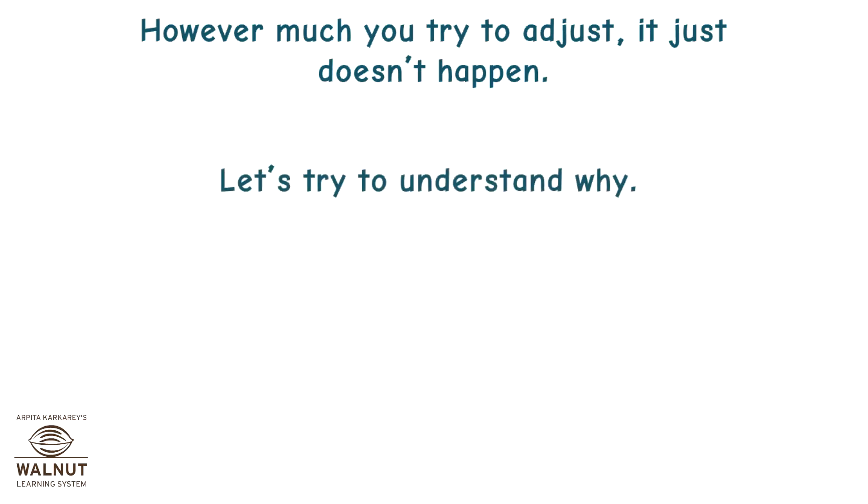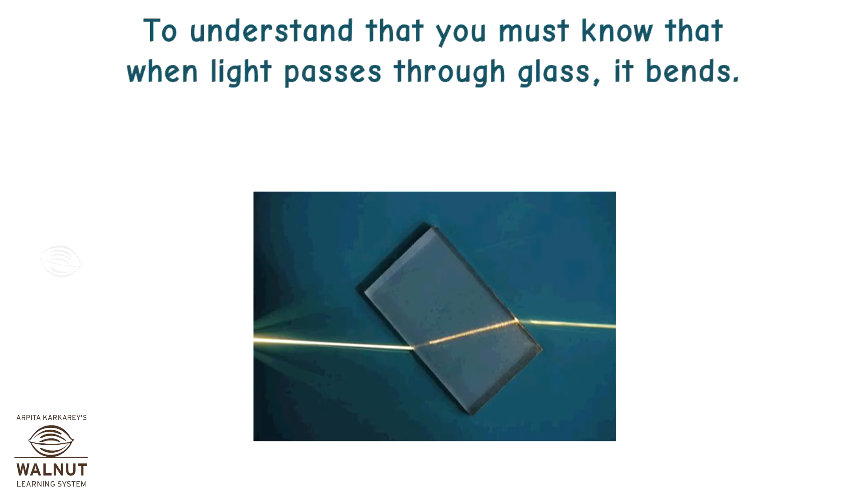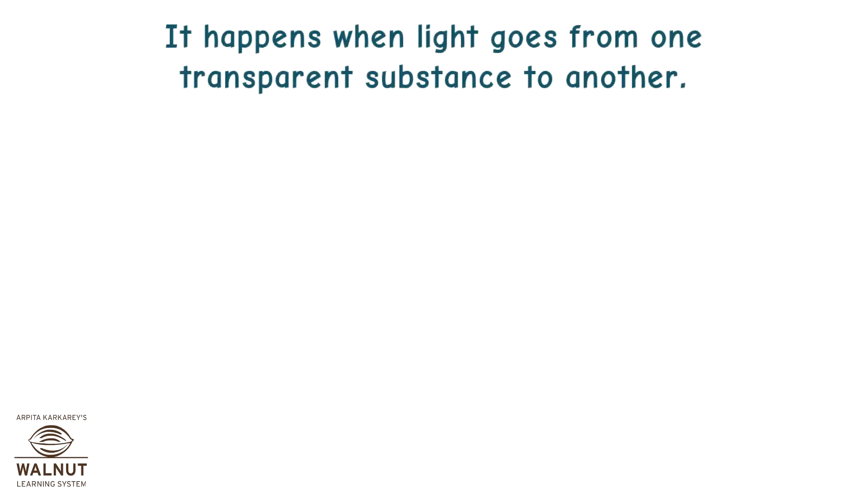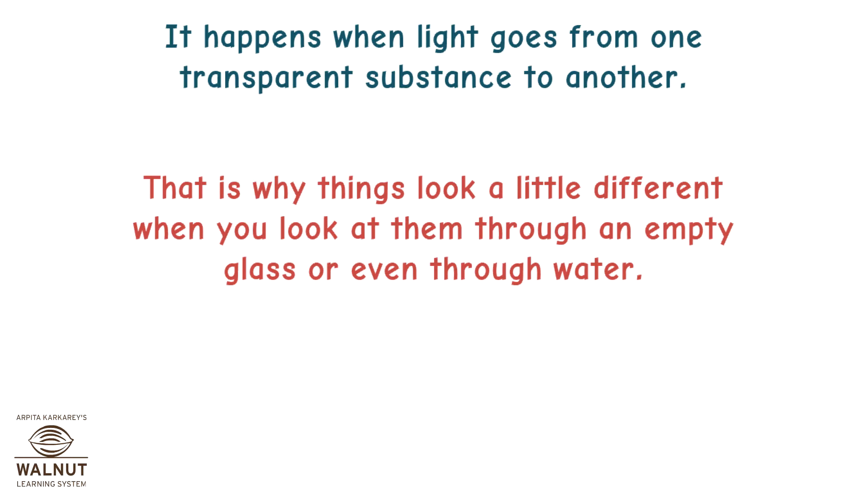Let's try to understand why. To understand that, you must know that when light passes through glass, it bends. This bending is called refraction of light. It happens when light goes from one transparent substance to another. That is why things look a little different when you look at them through an empty glass or even through water.